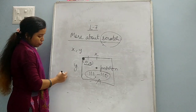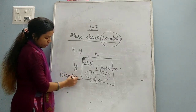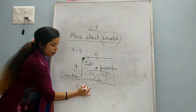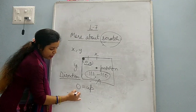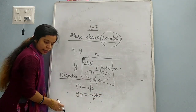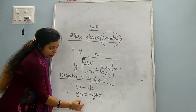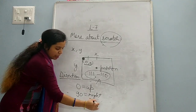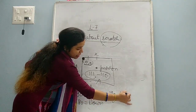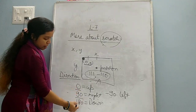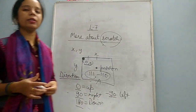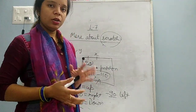Next one given in your book is direction. What is this direction? If the value is 0, it means the direction of the sprite is up. If the value is 90, the direction of the sprite is right side. If the value is 180, direction is downside. If the value is minus 90, direction is left side. So this value tells the direction of the sprite - in which direction our sprite is present on the stage.